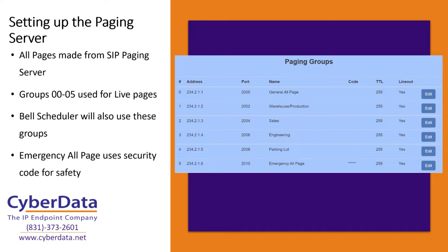Let's talk about setting up the paging server. I would deploy a paging server because this is the right device to page to all these different groups. As you can see here, we've got six groups starting from zero. Group zero is your general all-page, with an address and port combination listed. Group zero is one of the most generally used — set to 00 on your phone's keypad — so when you want to make a general announcement, you call the paging server and punch in 00.